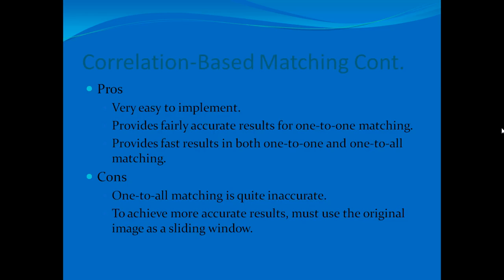The pros of correlation-based matching are that it is very easy to implement and provides fairly accurate results for one-to-one matching, with fast results in both one-to-one and one-to-all matching. However, the cons are that one-to-all matching is very inaccurate. To achieve more accurate results, you must use the original image as a sliding window, sliding it through each possible location in the second image to account for any rolling issues that could occur when capturing the fingerprint.